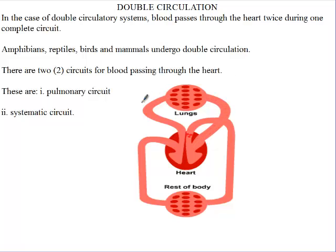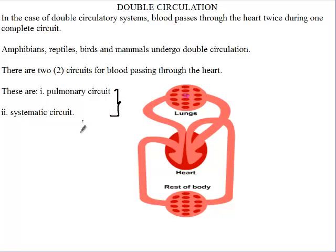Now, there are two circuits for blood passing through the heart — two processes. One is the pulmonary circuit, and then the second is the systemic circuit. So in double circulation, there are two main processes involved: the pulmonary action and the systemic action.